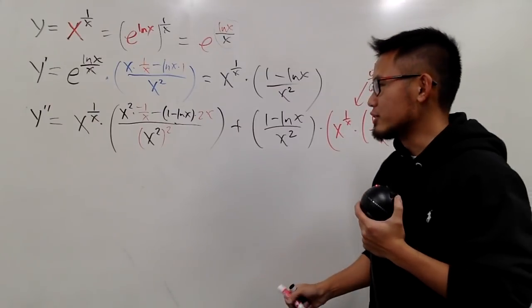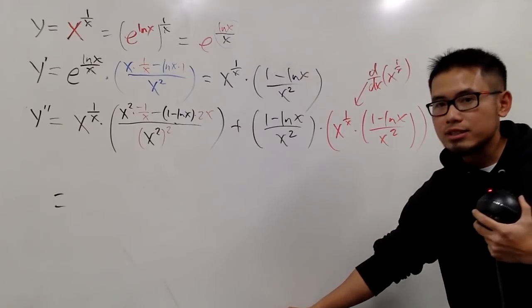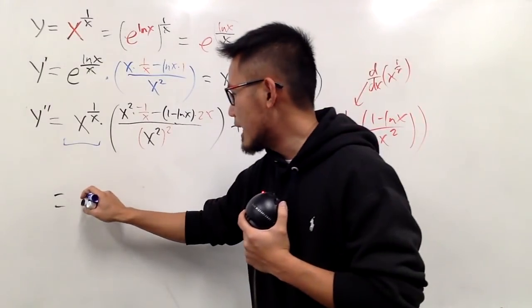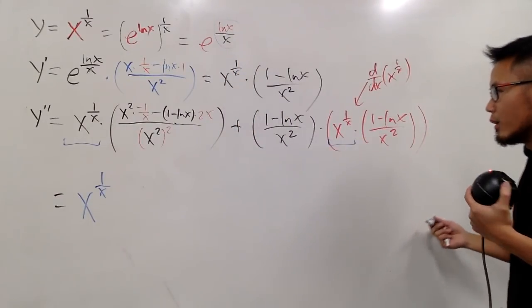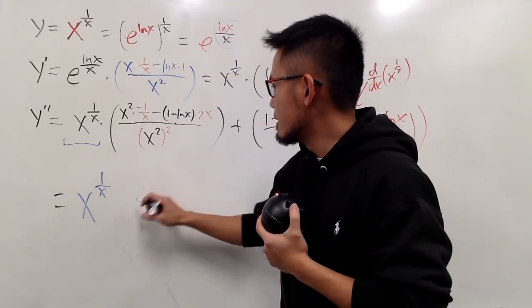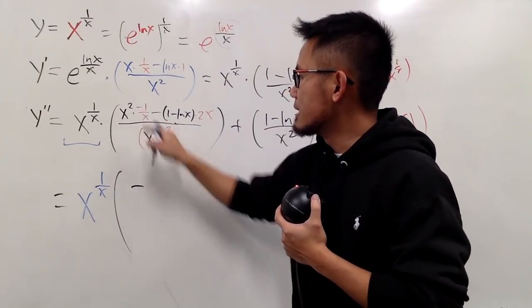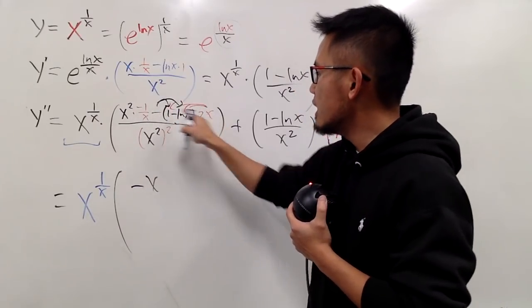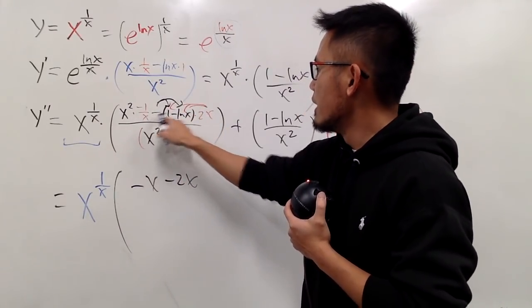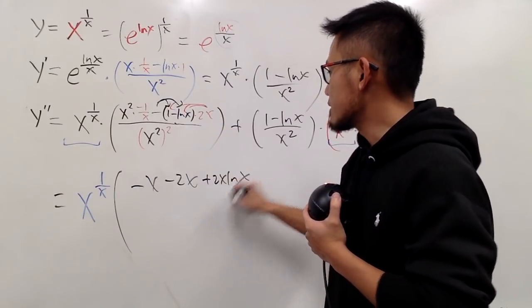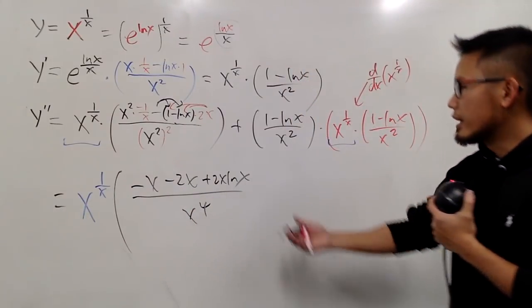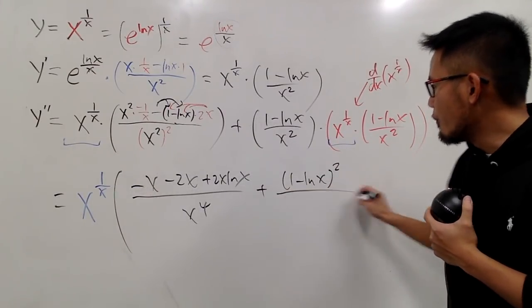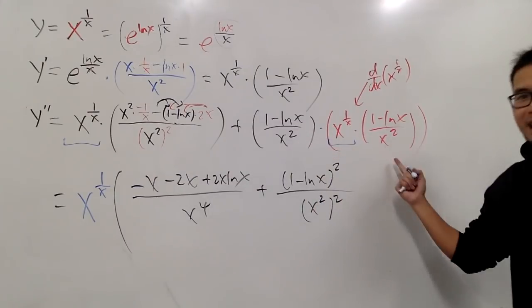Now let's see if there's any simplification we can do. Both terms have x to the 1 over x power, so let's factor that out. After factoring, the first bracket: distribute — this times that gives x, with a negative sign, so we get negative x. The negative distributes to give negative 2x and positive 2x ln x, all over x to the 4th power. Then the second part is plus 1 minus ln x squared over x squared squared.